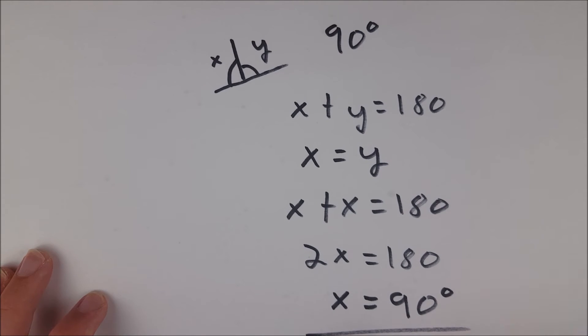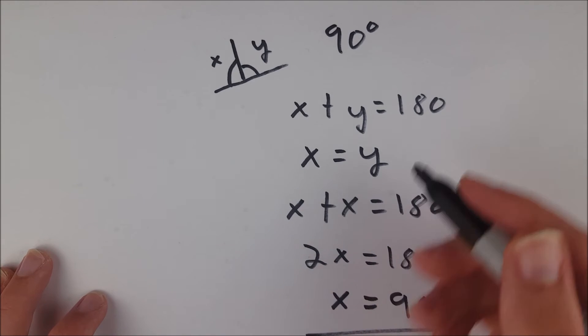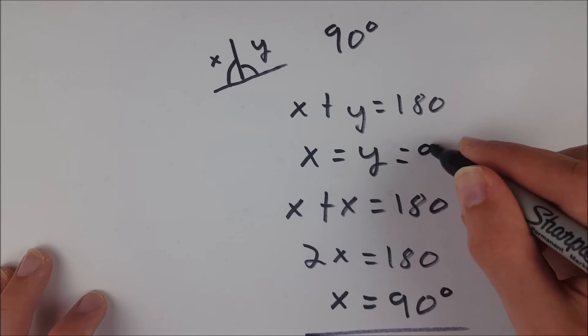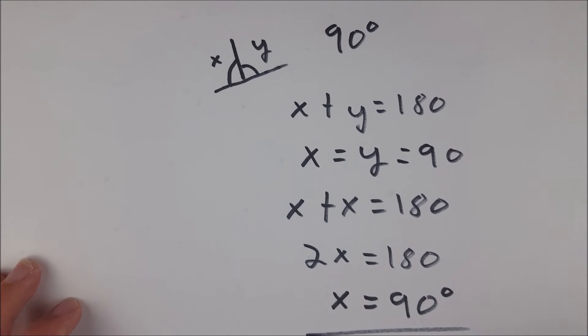Of course, from this, you can with one more step say, because x equals 90 degrees and x equals y, we know that y also equals 90 degrees. So they're both right angles.